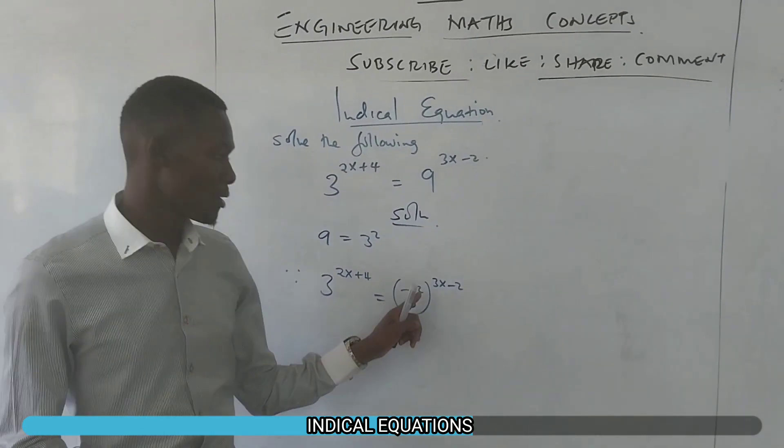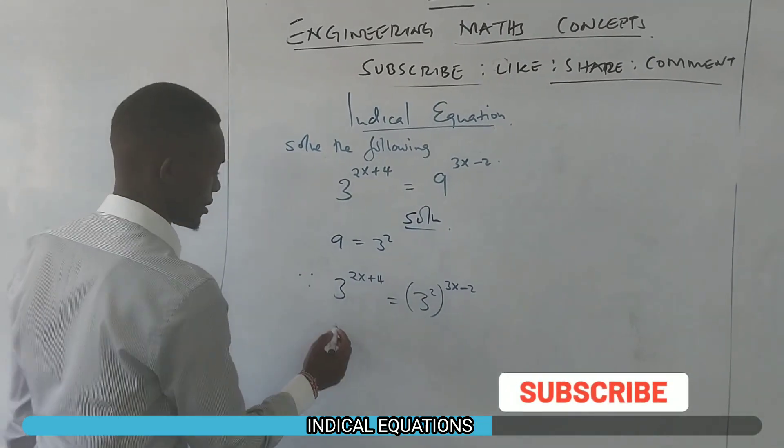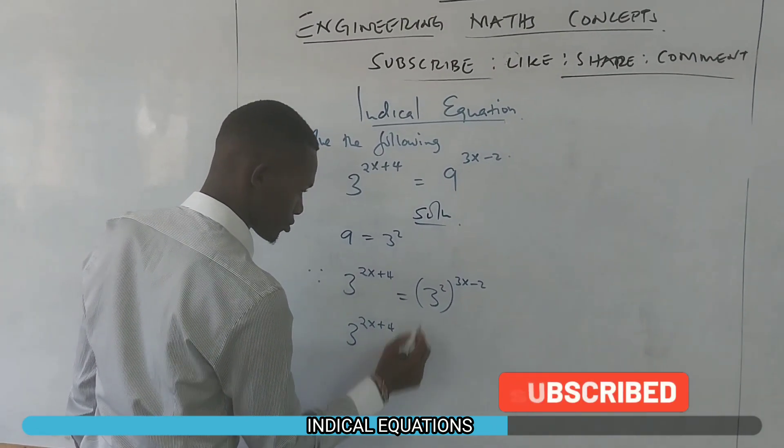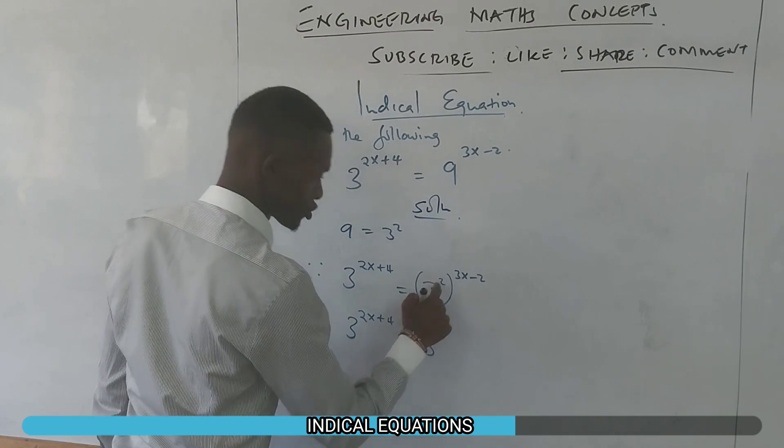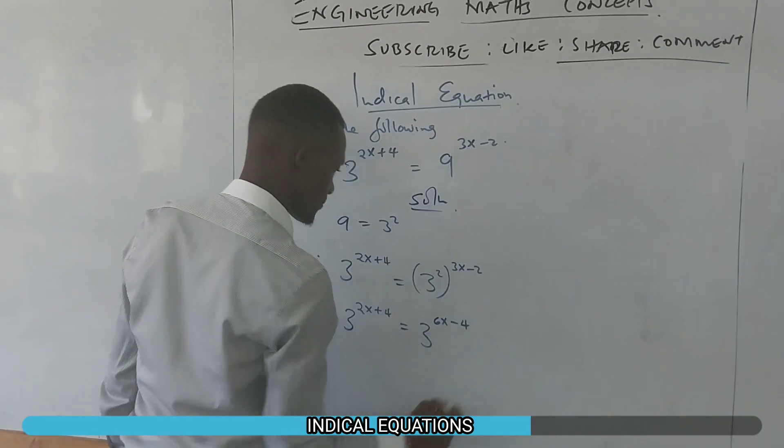But what we know about the power of powers. So this one is a power, this one is a power. So you can open this bracket and you have 3^(2x+4) equals to 3. Then 2 multiplies everything here. So we have 6x minus 4.